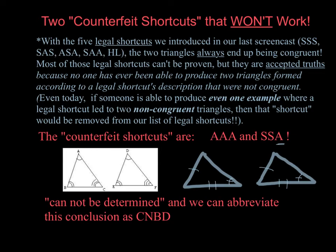Let me emphasize that in both of these cases the triangles could be congruent, but the marked information is not sufficient to guarantee that they're congruent. When you encounter this set of information, you just respond with 'it cannot be determined,' and we can abbreviate that conclusion as CNBD.